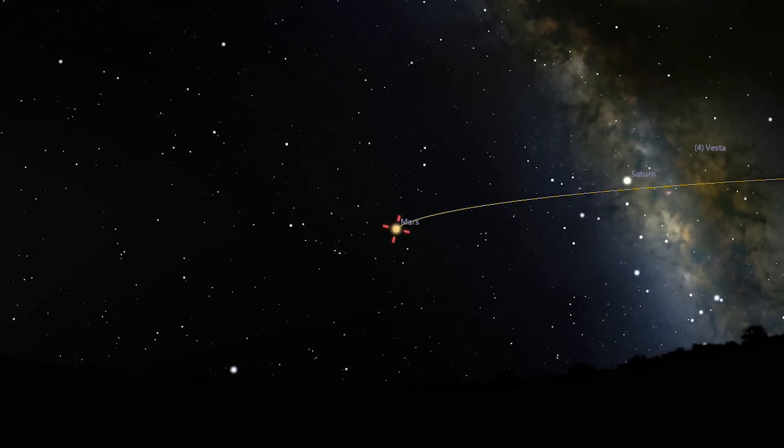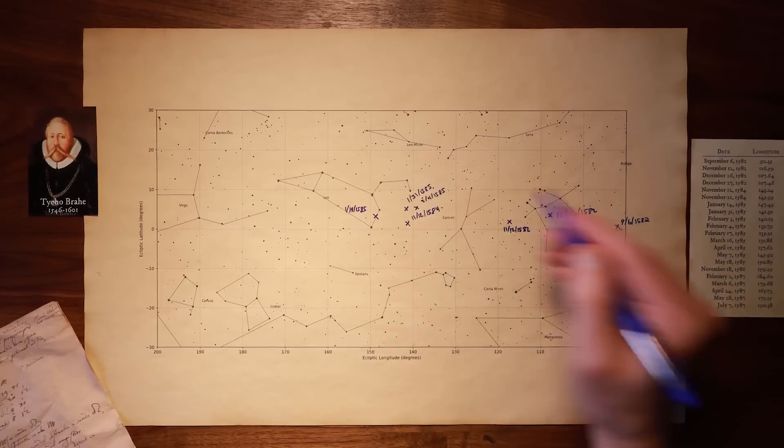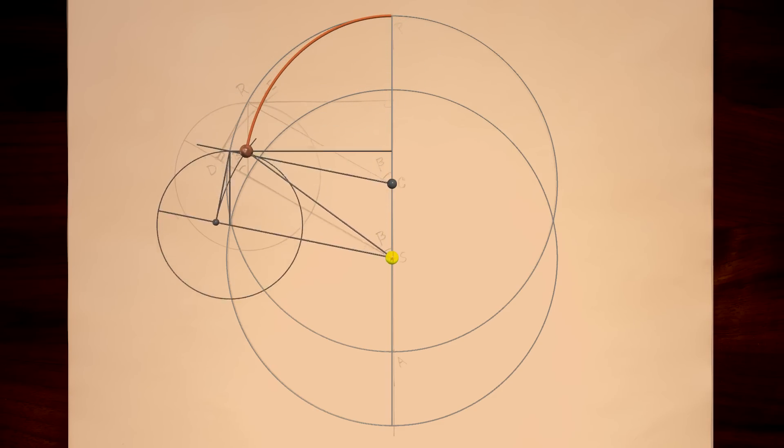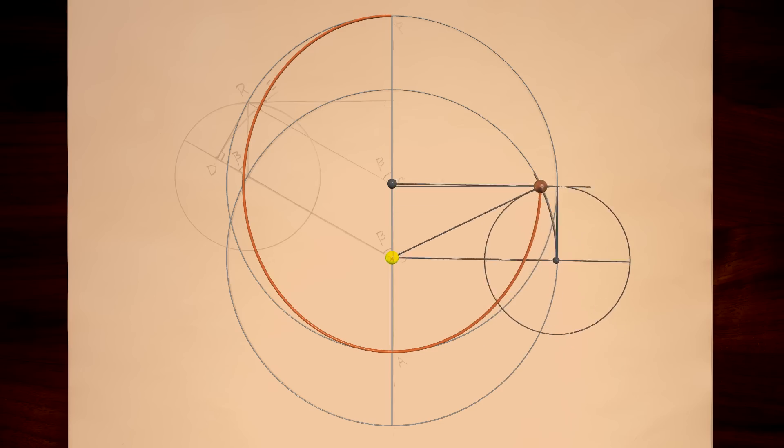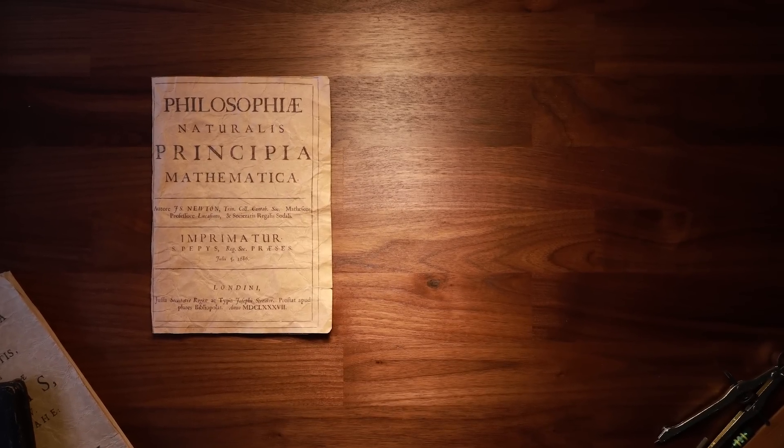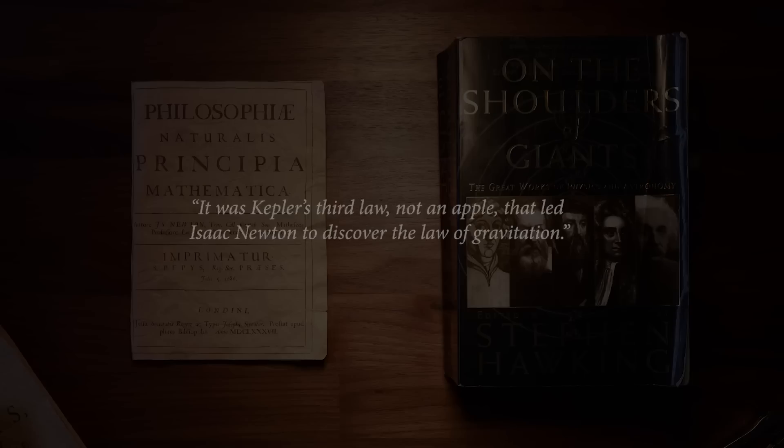Kepler showed us, arguably for the first time, what it really looks like to do modern science. Instead of having philosophical debates on how nature should work, Tycho and Kepler turned to methodical observation and messy experimentation. Eighty years after Kepler discovered the ellipse, Isaac Newton would publish the theory of gravity in his Principia. When the book was recorded by the Royal Society, it was introduced as a mathematical demonstration of the Copernican hypothesis as proposed by Kepler. As Stephen Hawking writes, it was Kepler's third law and not an apple that led Isaac Newton to discover the law of gravitation. There's this amazingly clear path from Tycho's observations to Kepler's experimentation to Newton's laws that really is the blueprint for modern science.